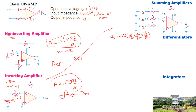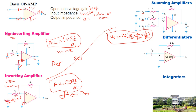In a differentiator circuit, there is a capacitor in the input circuit and a resistance in the feedback network. The output expression is: Vout equals minus RC times dVi/dt — the output is a derivative of the input voltage.